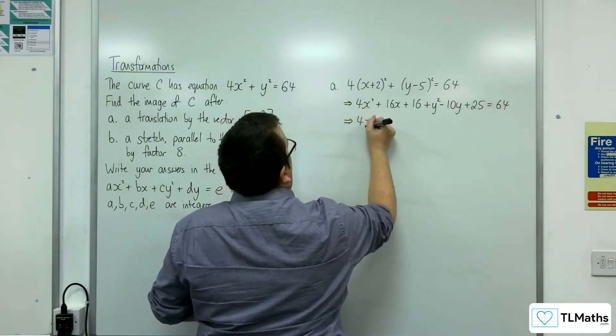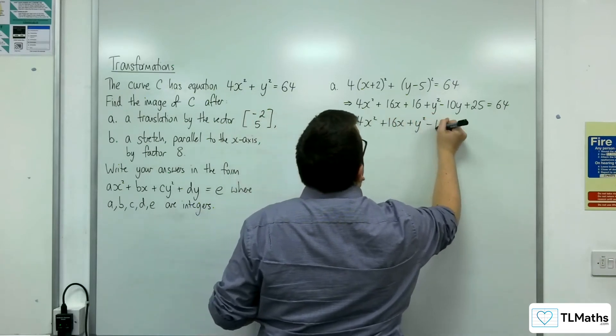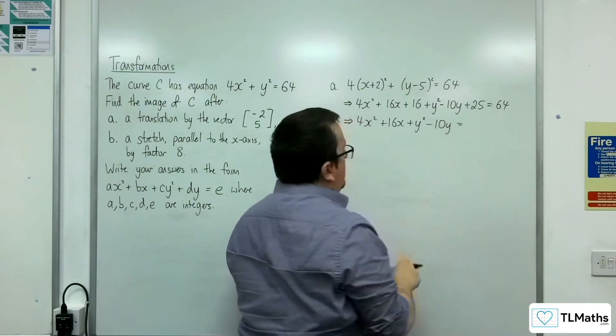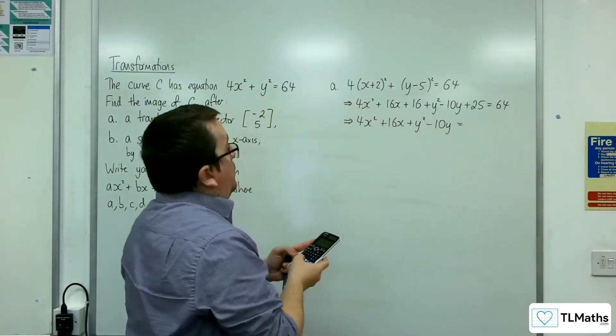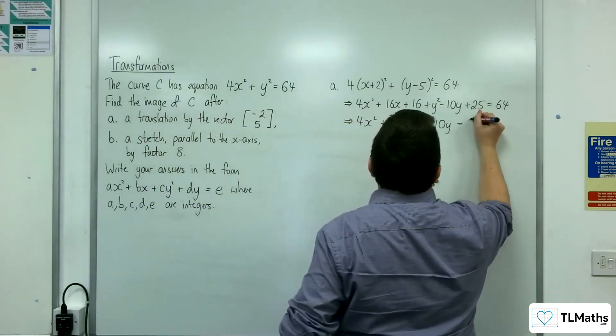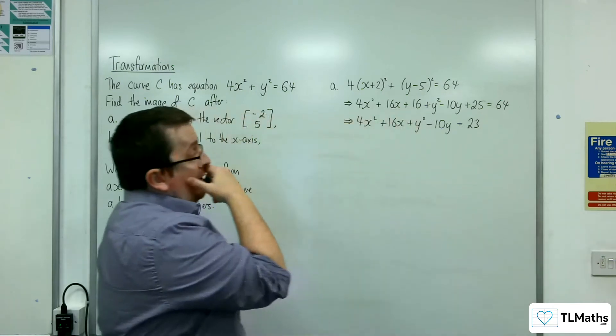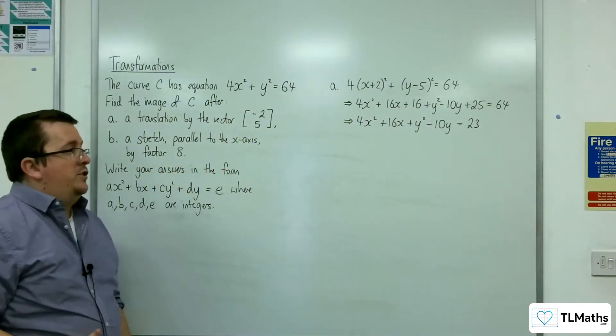So this would be 4x squared plus 16x, plus y squared minus 10y equals, we've got the 64, we're going to take away 25, we're going to take away 16, and so we get 23. And so this is the equation of my ellipse after this translation.